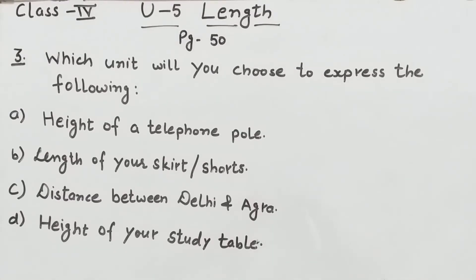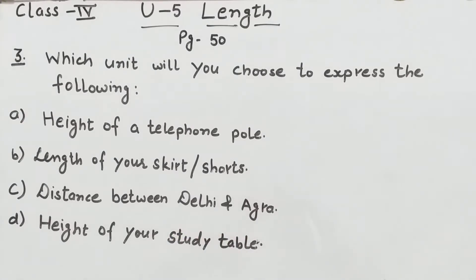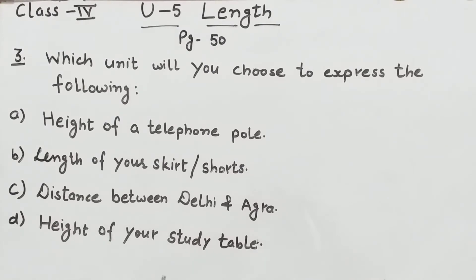Next, question 3: which unit will you choose to express the following? हम इन सभी चीजों की length को express करने के लिए किस unit को choose करेंगे। हमारे पास 3 units हैं — centimeter, meter, और kilometer। जो बहुत smallest object है उसके लिए centimeter, उससे थोड़ा बड़ा object हो तो meter, और जो बहुत बड़ा object है जिसकी बहुत ज्यादा length है उसके लिए kilometer।